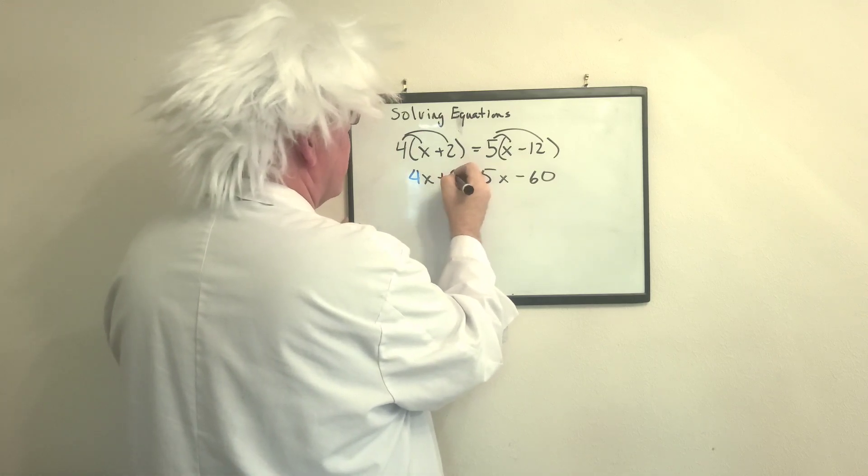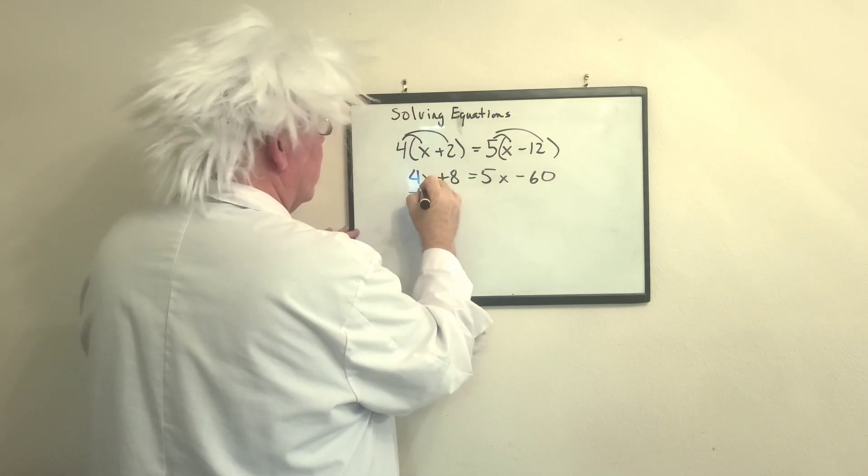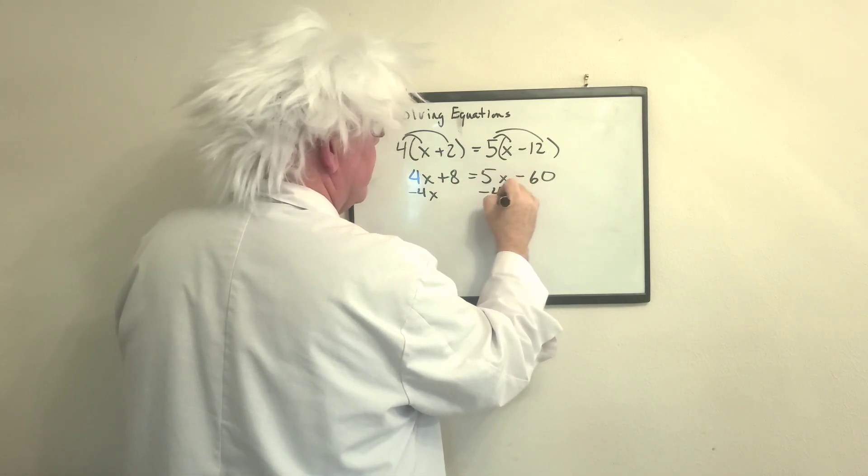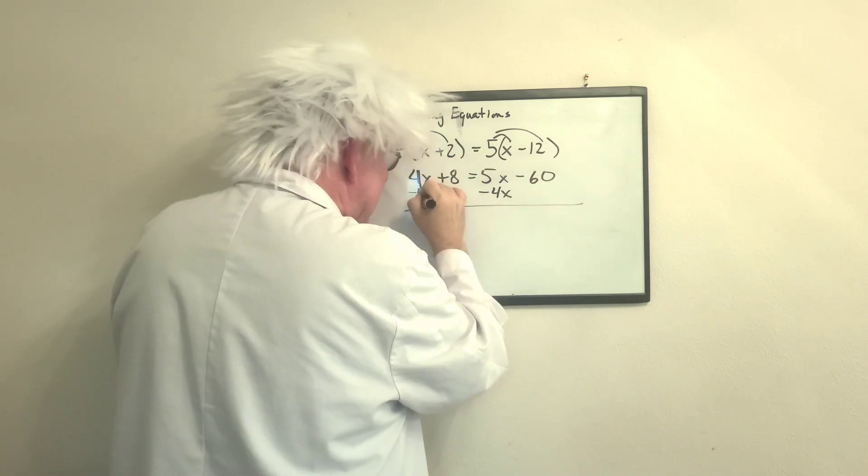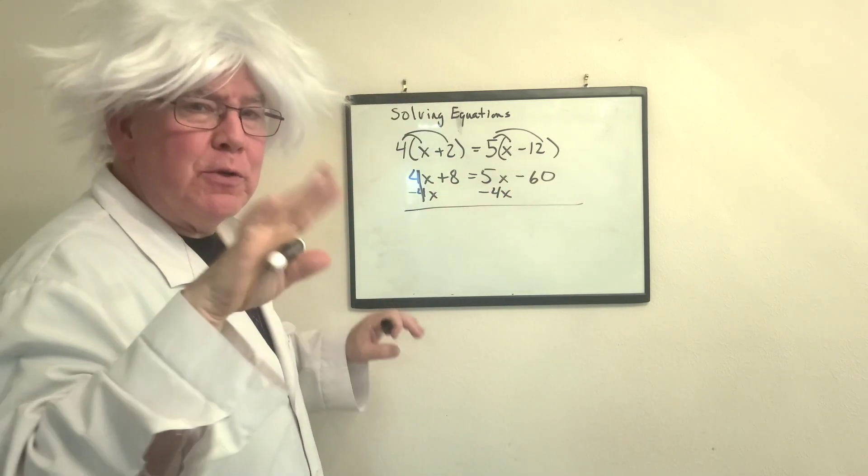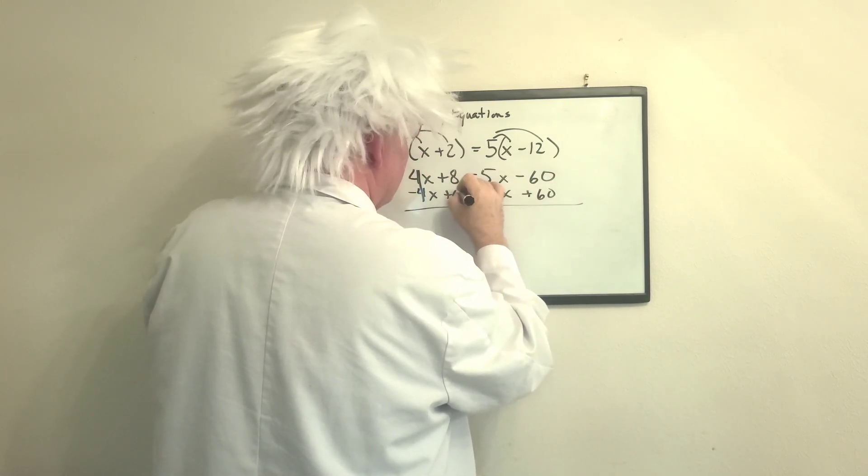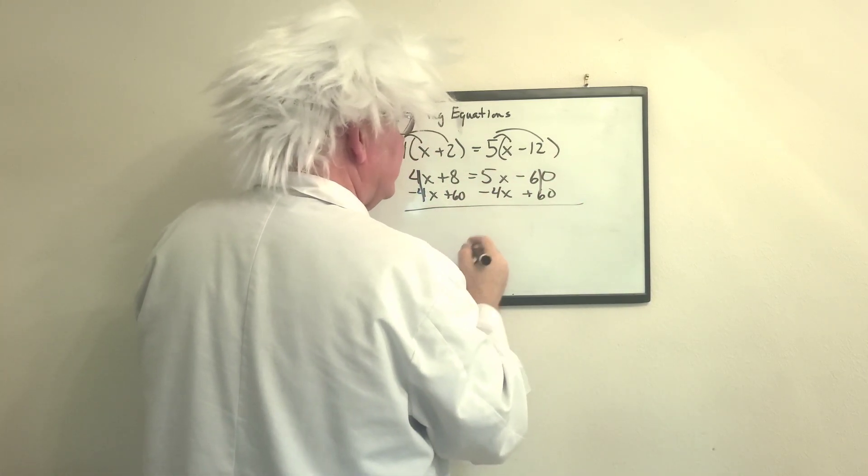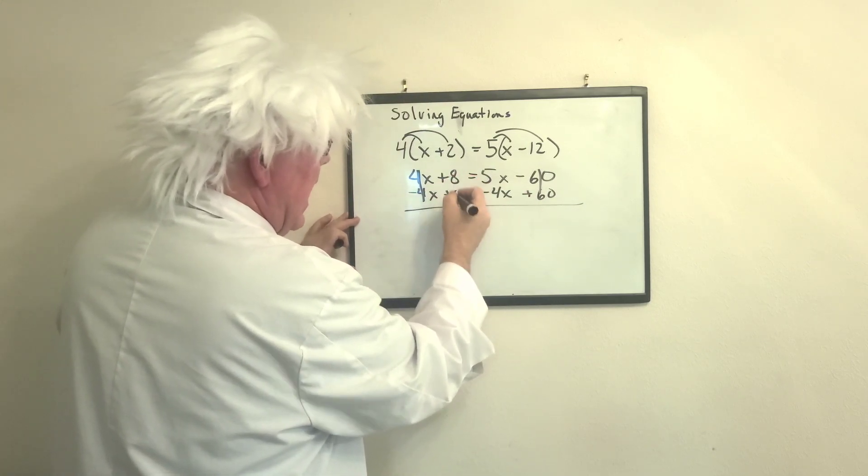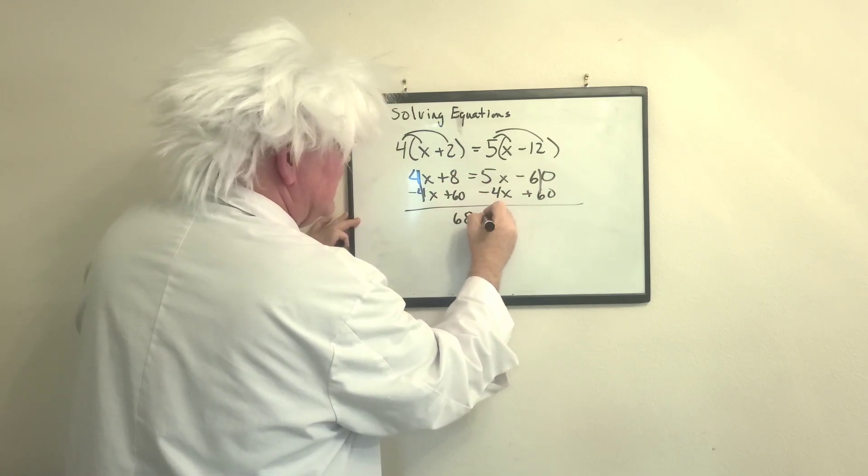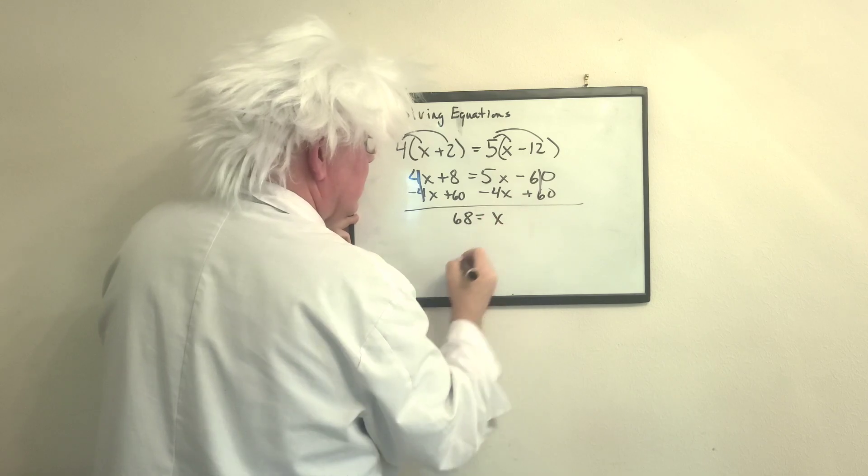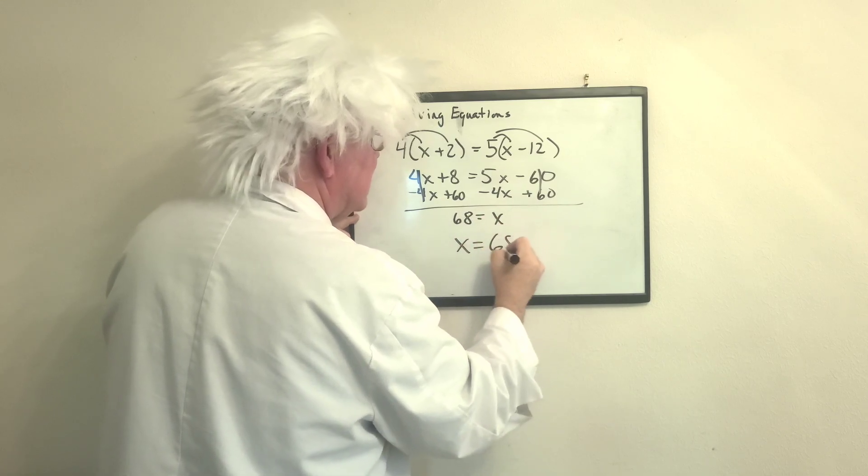Now, the next thing I'm going to do is I'm going to subtract 4x from both sides. Now, since that goes that way, watch what I'm fixing to do. I'm going to do this all on this line. I'm going to add 60, all right? Okay, so, 8 plus 60 is 68. 5 minus 4 is 1, so x equals 68.